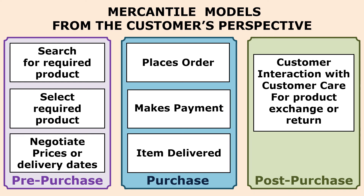Once the product or several products are selected, the customer moves on to placing the order. All items are added to the cart, which identifies the names, count, and price of each product and calculates the total payable amount. Using payment options like debit cards, credit cards, electronic money transfers, digital wallets, or mobile payments, the customer makes the payment. The online seller then dispatches the product as scheduled.